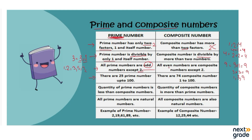All even numbers are composite numbers except two. For example, even numbers are: two, four, six, eight, and so on.